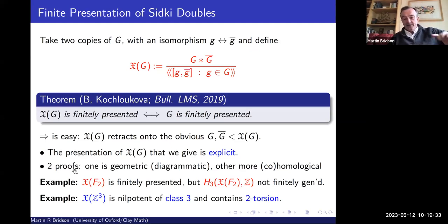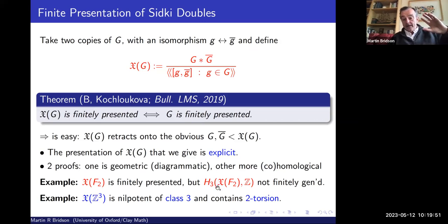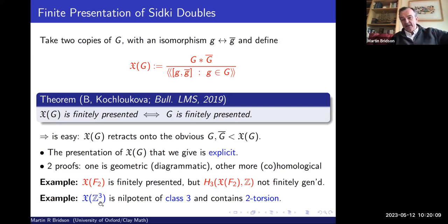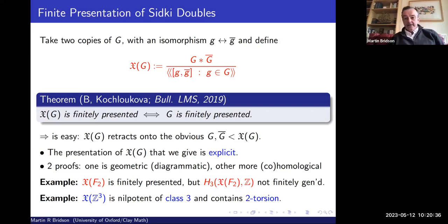These really are interesting groups even when G is easy. For example, if G is the free group of rank two, its Sidki double is finitely presented but its third homology is not finitely generated — an exotic property. If you take G = Z³ and double it, you get a group that is nilpotent of class three but not torsion-free — it has some 2-torsion. So the doubling construction produces interesting, non-trivial groups.